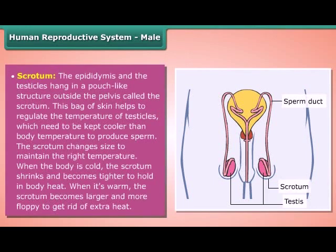Scrotum. The epididymis and the testicles hang in a pouch-like structure outside the pelvis called the scrotum. This bag of skin helps to regulate the temperature of the testicles, which need to be kept cooler than body temperature to produce sperm. The scrotum changes size to maintain the right temperature. When the body is cold, the scrotum shrinks and becomes tighter to hold in body heat. When it is warm, the scrotum becomes larger and more floppy to get rid of extra heat.